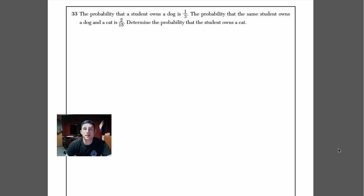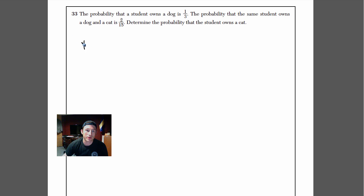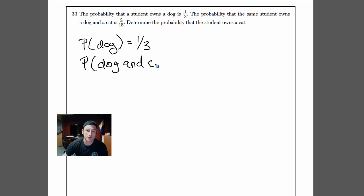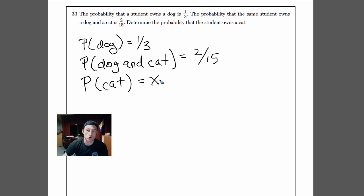Number 33 says: the probability that a student owns a dog is 1/3. The probability that the same student owns a dog and a cat is 2/15. Determine the probability that the student owns a cat. I'll write out my probabilities to get organized: P(dog) = 1/3 and P(dog and cat) = 2/15. We want P(cat), which we'll call x. Here's the big clue — when you see the word 'and' in probability, it means multiplication.